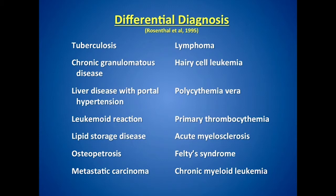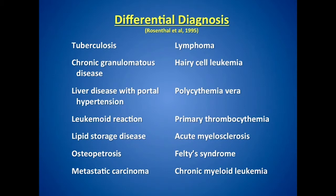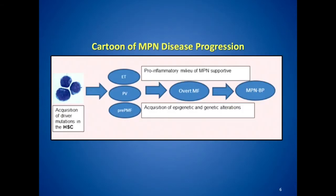When your internist first sees you, they undergo a differential diagnosis to make sure the myelofibrosis is not due to another underlying disease. In the past, TB and liver disease could look like myelofibrosis, as can hairy cell leukemia, metastatic carcinoma, and rarely autoimmune diseases such as lupus, which can present with a fibrotic marrow virtually identical to MPN-associated myelofibrosis.